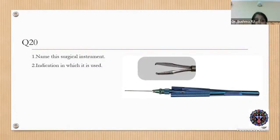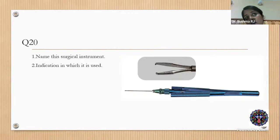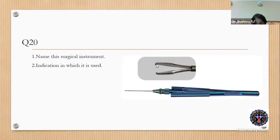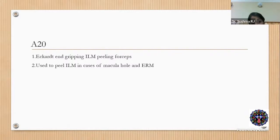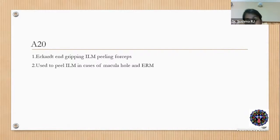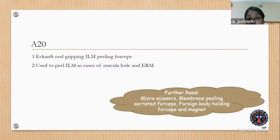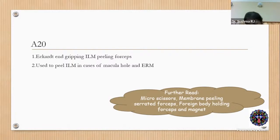The twentieth question shows a surgical instrument. Always look at the tip to understand its function. The tip here is bent like a plucker with a flat serrated body — this is Eckhardt's ILM peeling forceps, used to peel ILM in macular hole and epiretinal membrane surgery. Also remember other instruments: foreign body forceps, foreign body magnet, different gauge micro scissors used in diabetic TRDs, and membrane-segmenting forceps.